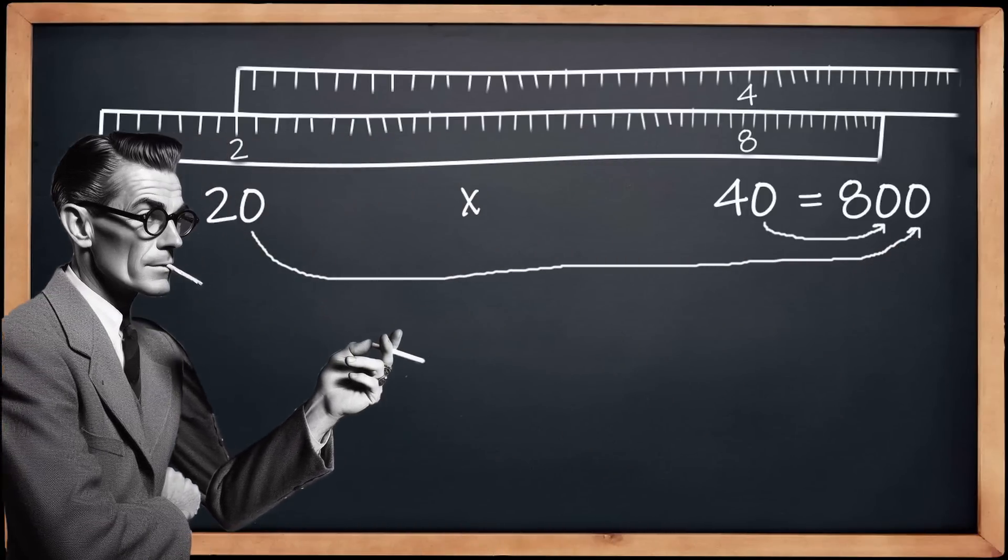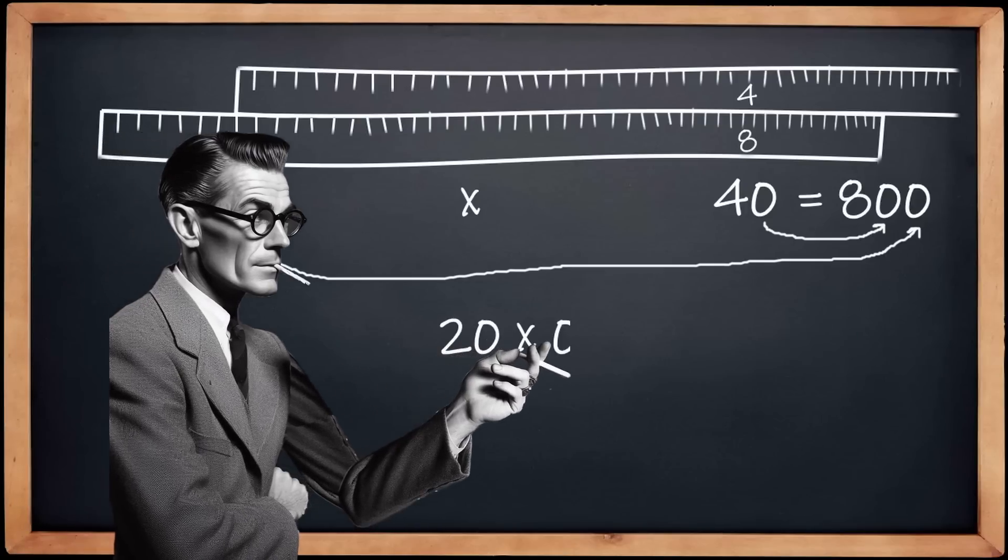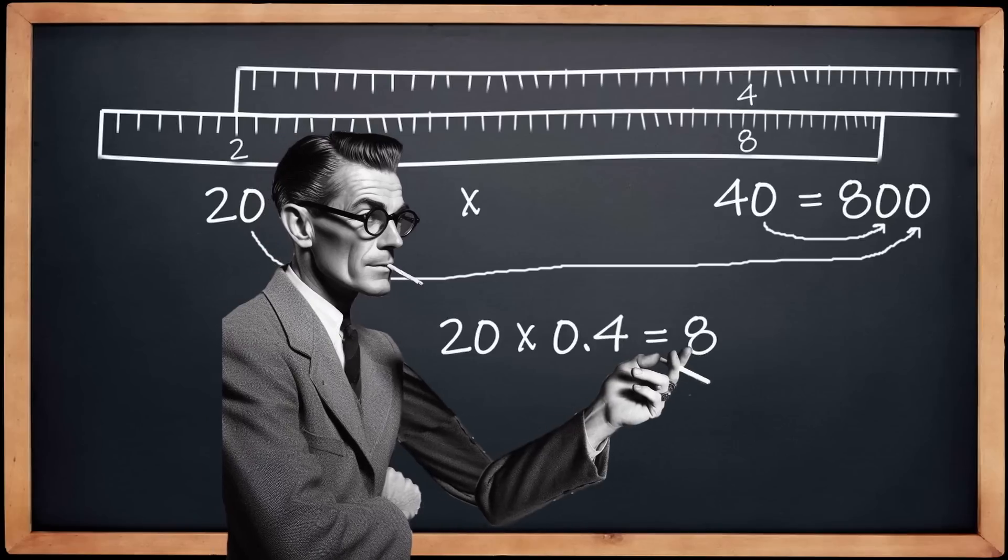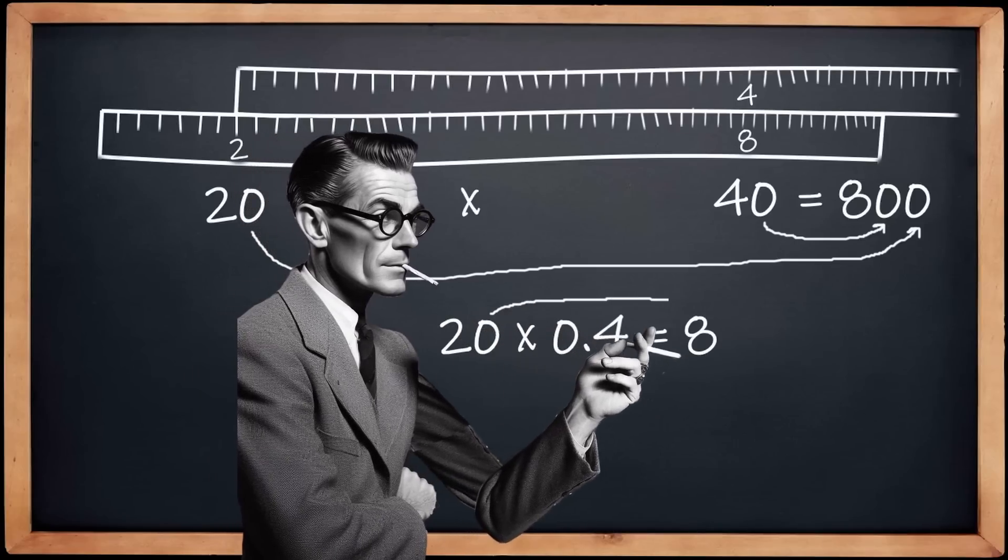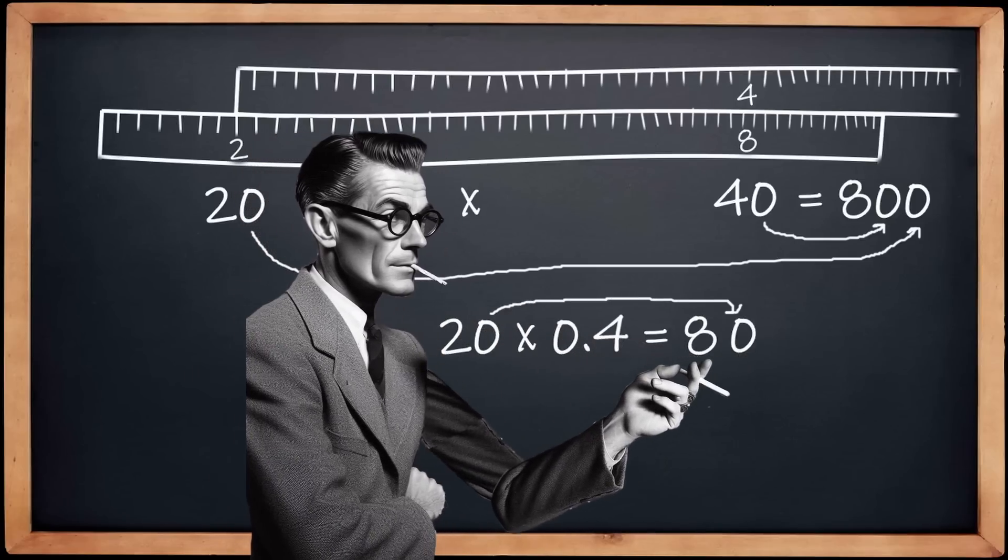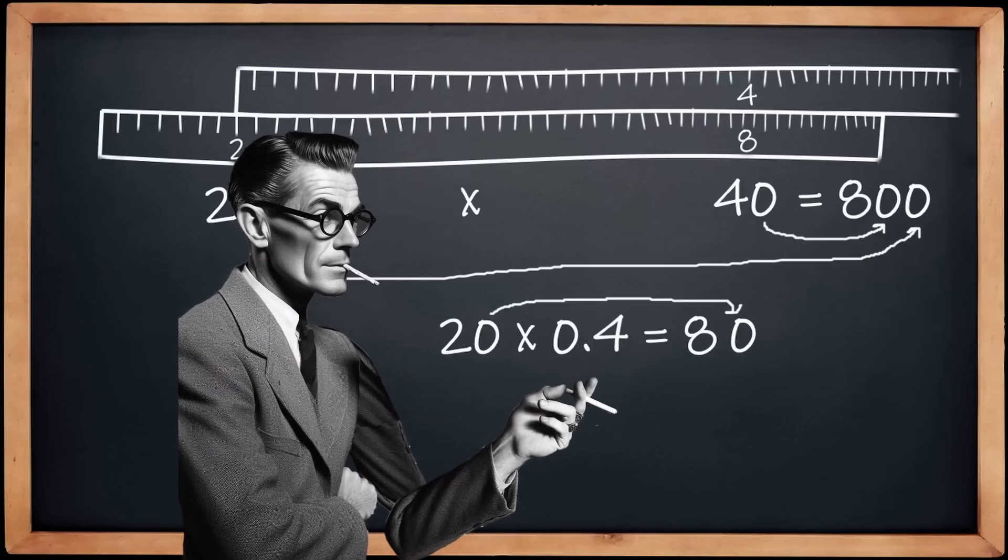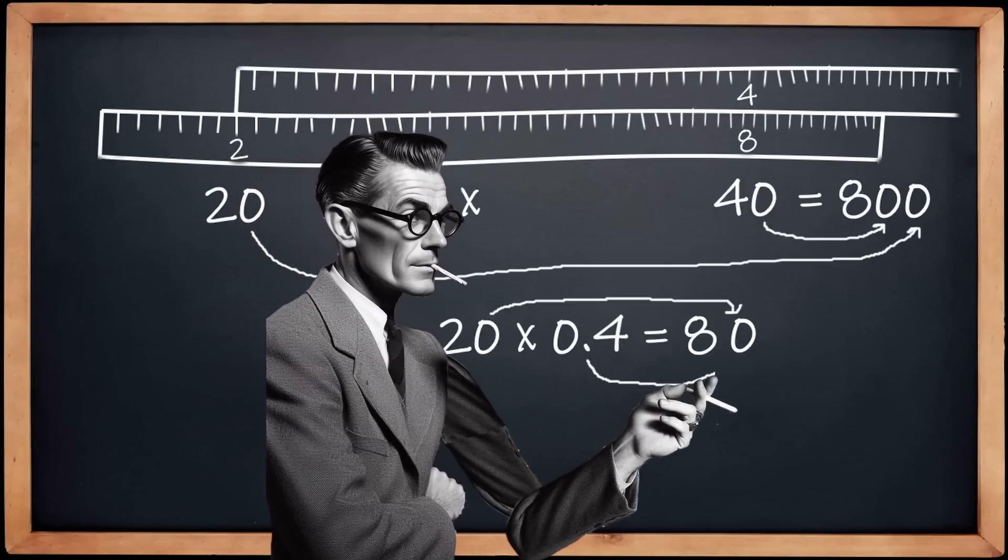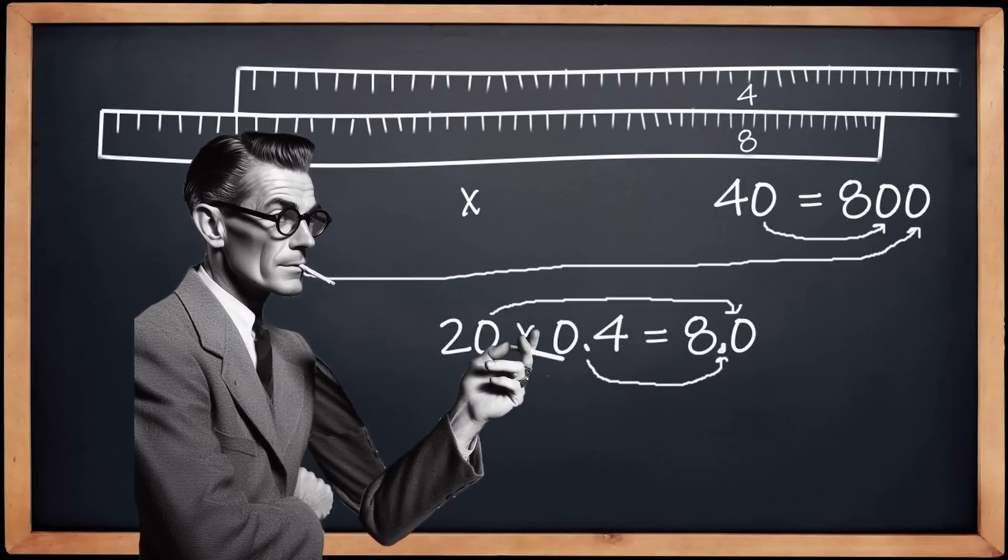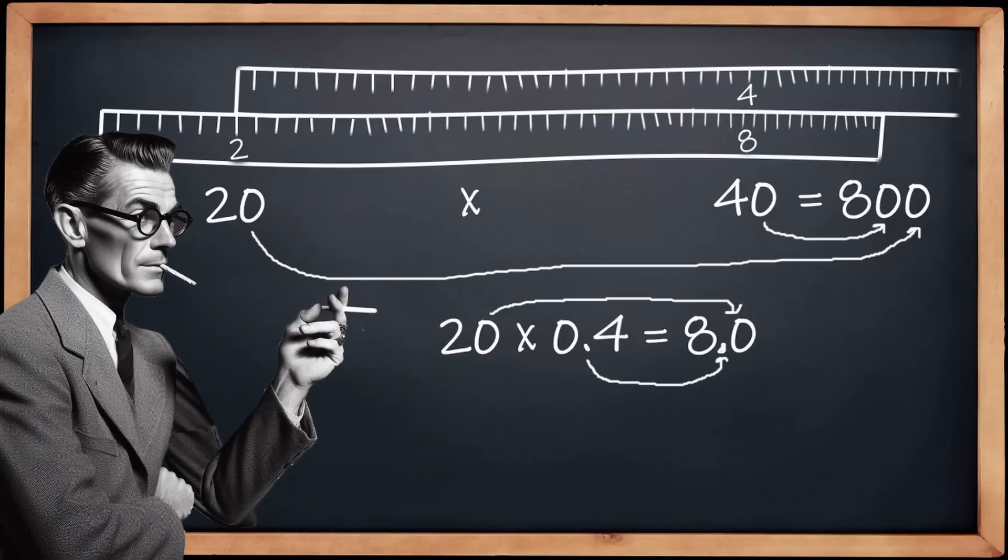Same thing for decimal points. 20 times 0.4 is still 8, but you have to know to add the zero for the 20, which would make it 80, but then you have to move the decimal point back over from the 0.4, which takes you back to 8.0. Yeah, you still have to do a lot of this stuff in your head and it can get kind of migraine-inducing sometimes.